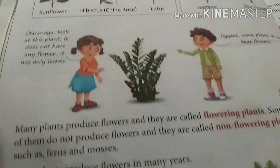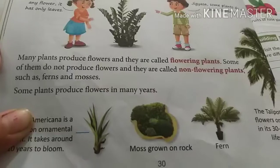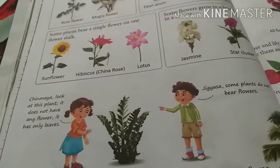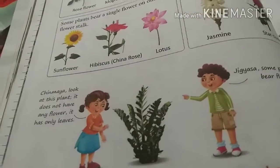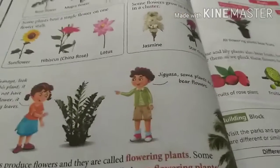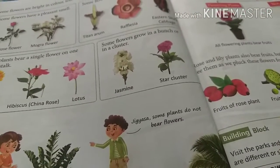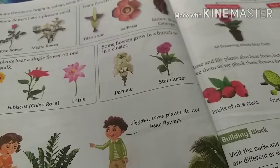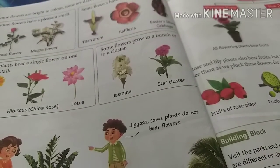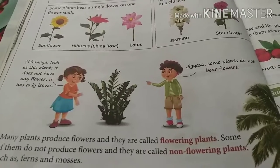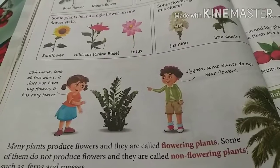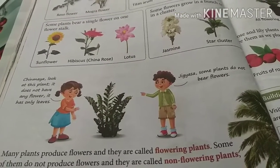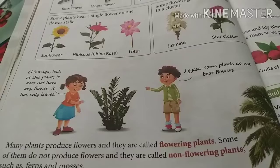On page number 30 of lesson 3, some flowers grow on one stalk — such as sunflower, hibiscus, and lotus. Some flowers grow in a cluster on one stem. Flowering plants are plants that produce flowers and are called flowering plants.